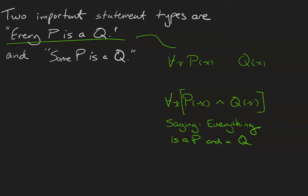So what I really should have is a conditional. For everything in my universe, if it is a p, then it is a q. So the conditional is the correct way to symbolize the statement, every p is a q.